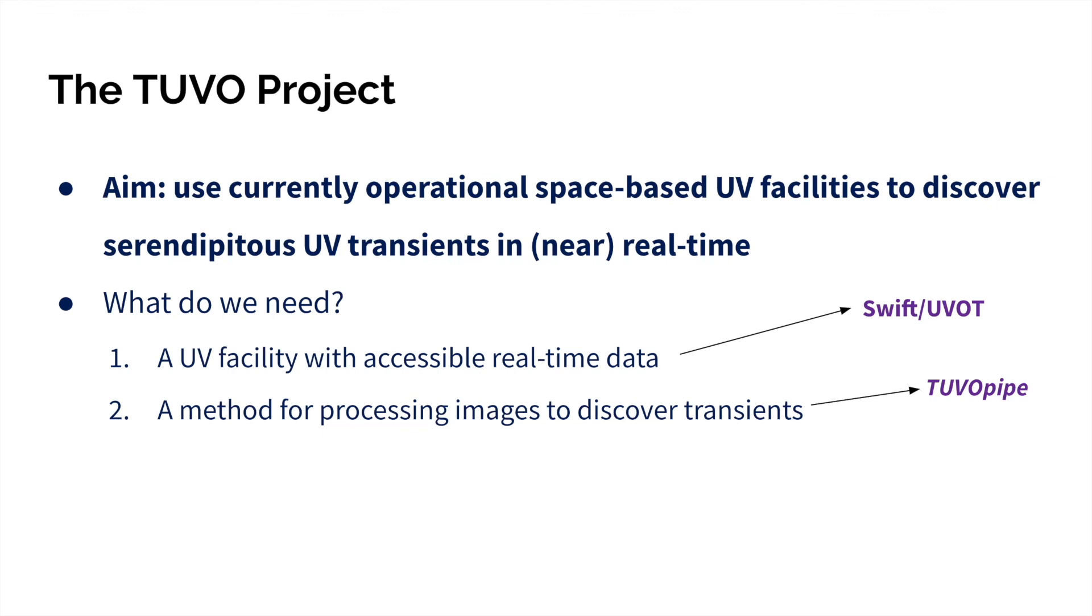So the idea of the TUVO project is to use currently operational UV facilities to look for transients in near real time in the UV. What we need is a UV telescope with real-time data that we can access, and for that we use UVOT aboard Swift. Then we need a method for processing their images to look for transients. For that, we use TUVOpipe, which is the customized pipeline that we built for this purpose.